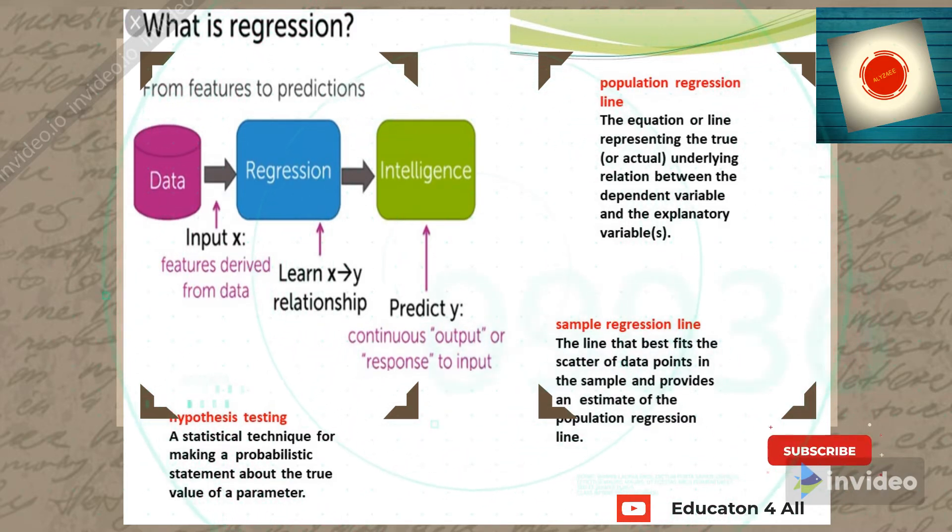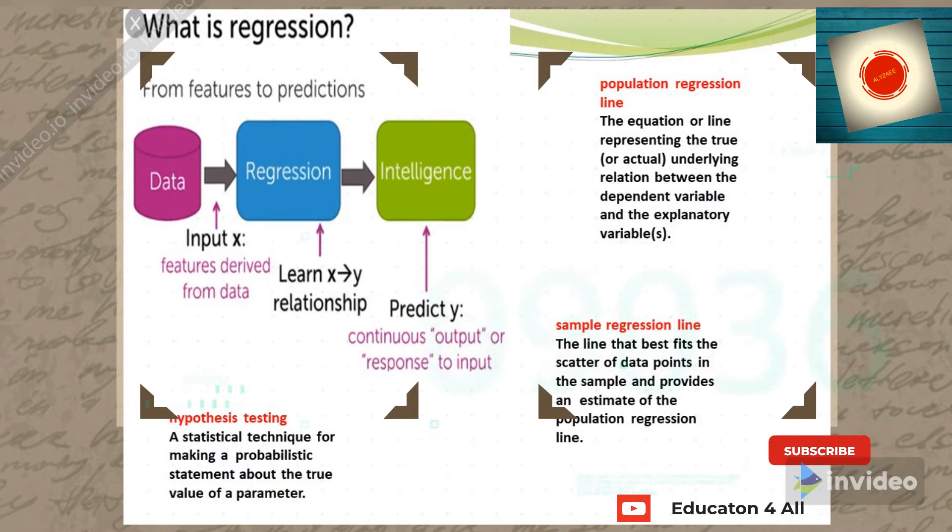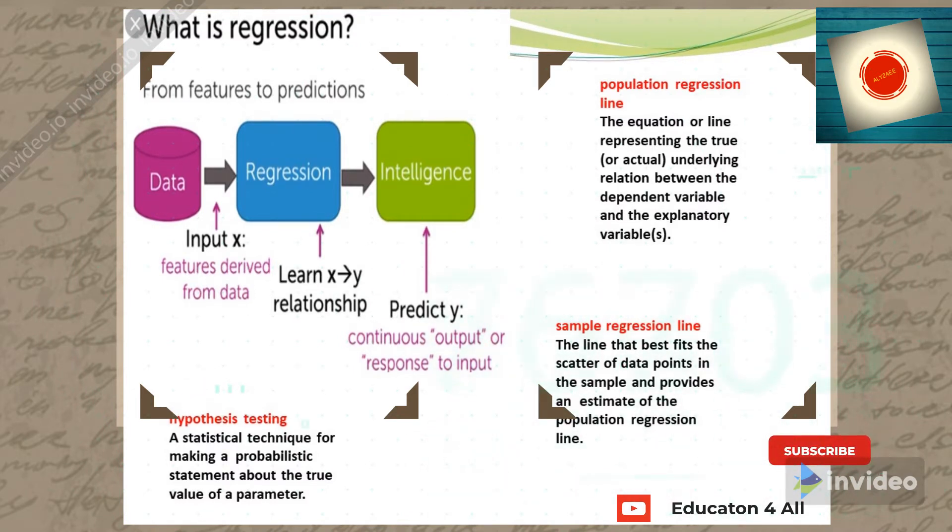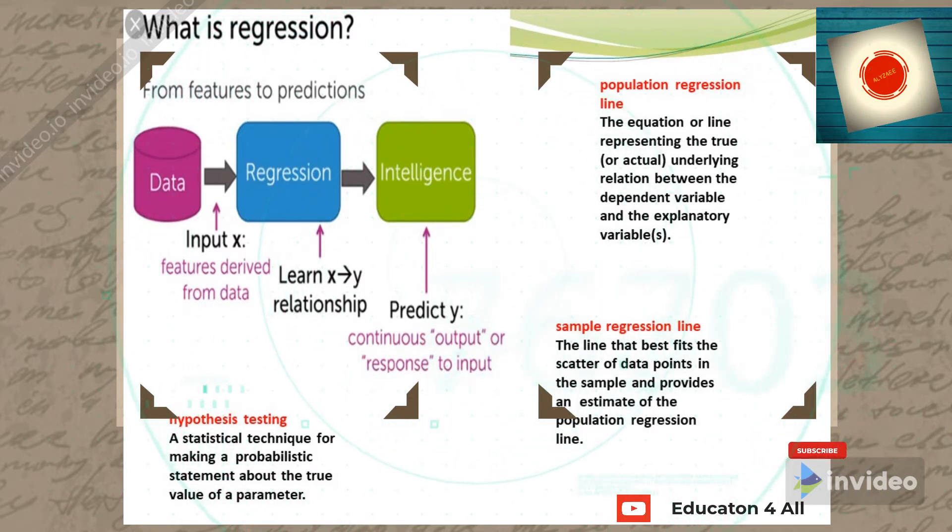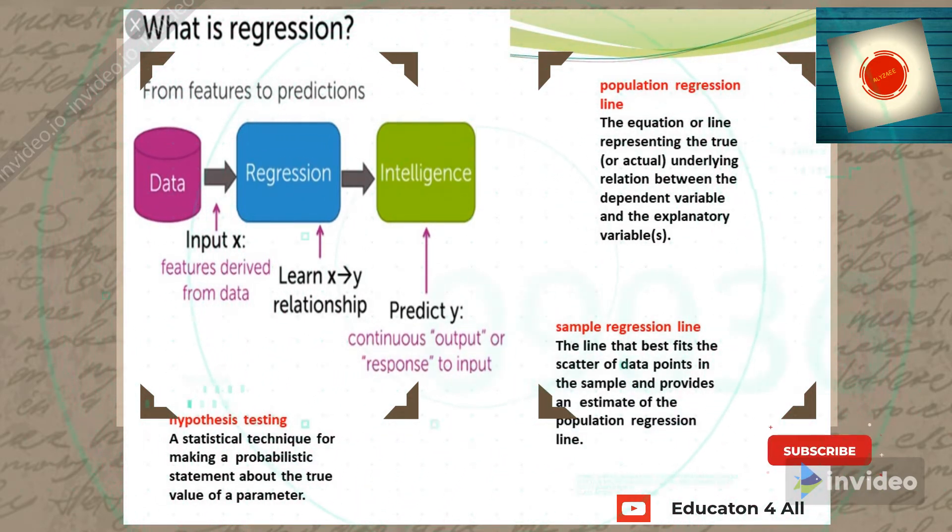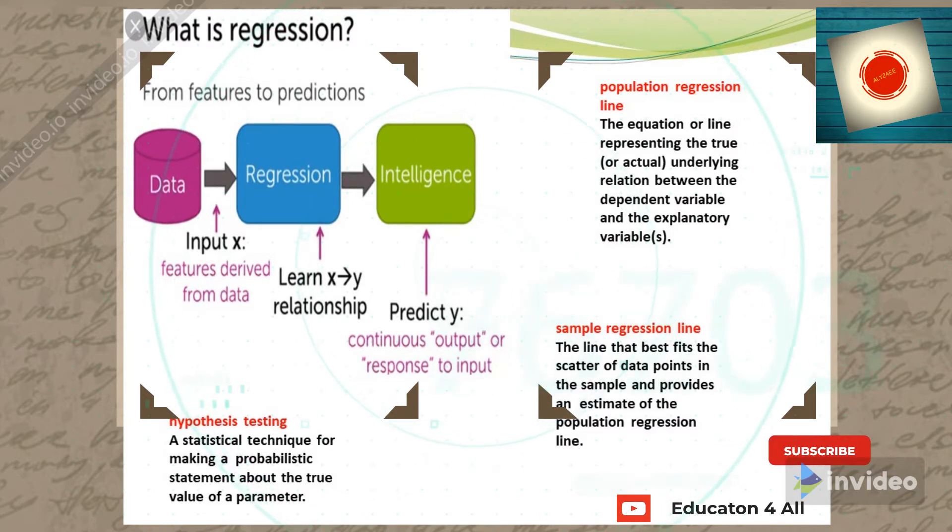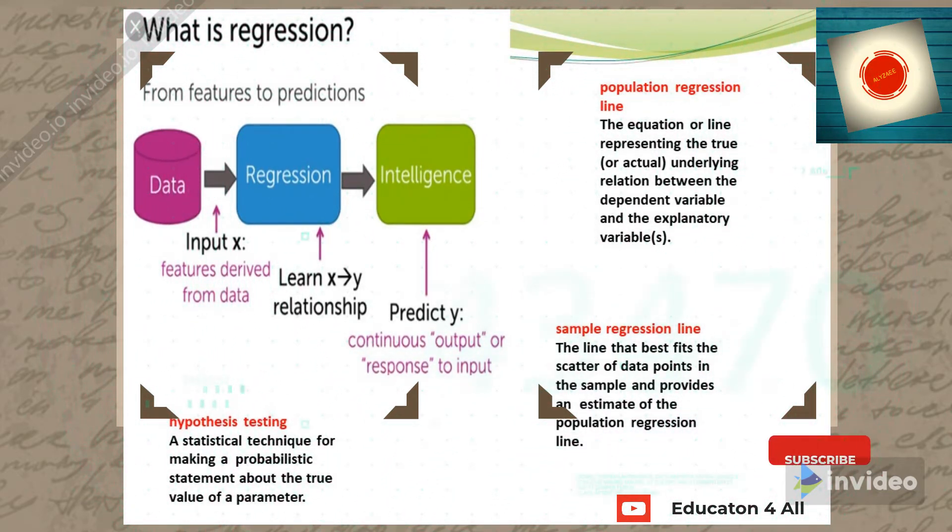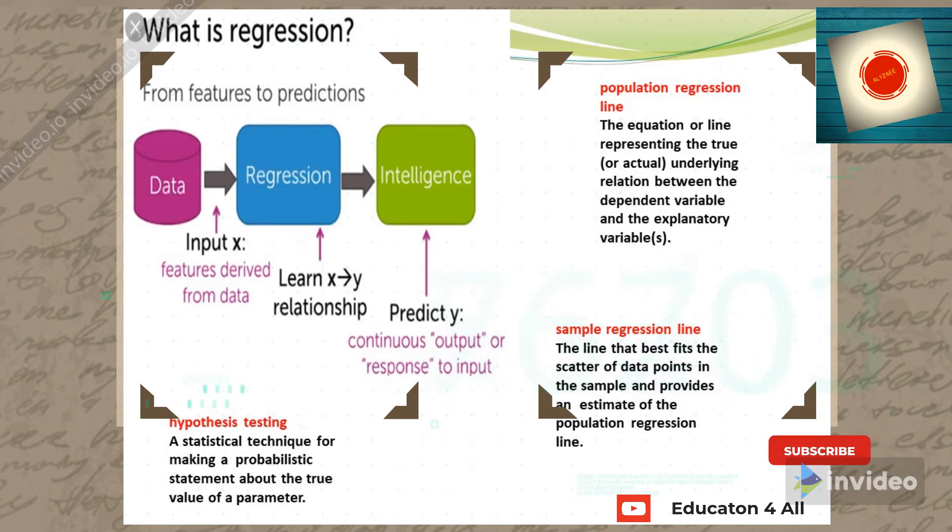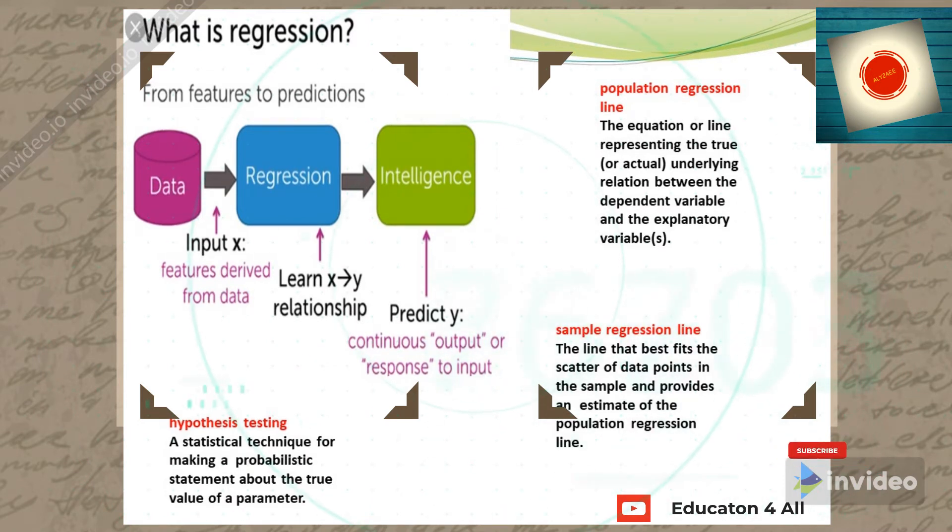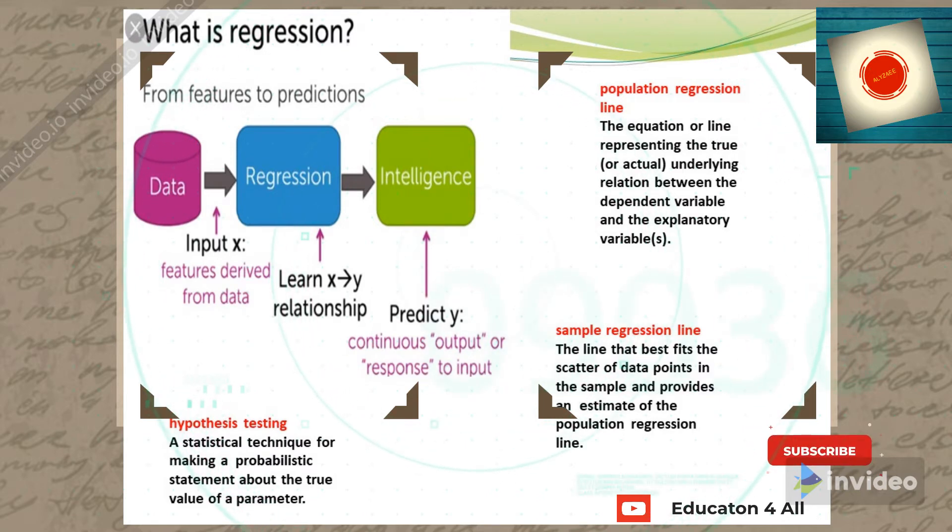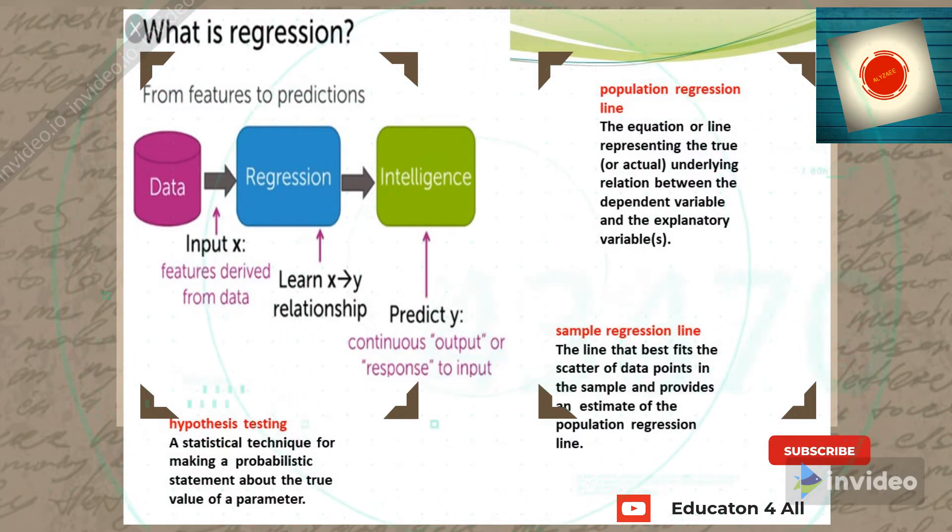Population regression line: the equation representing the true underlying relation between the dependent variable and explanatory variables. Sample regression line: the line that best fits the scatter of data points and provides an estimate of the population regression line. Hypothesis testing: a statistical technique for making probabilistic statements about the true value of parameters.